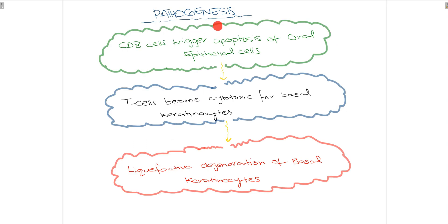Regarding the pathogenesis of oral lichen planus, there are generally three important steps. Firstly, there are T cells called CD8 cells which trigger the apoptosis of oral epithelial cells. When these cells undergo apoptosis, the T cells become cytotoxic for basal keratinocytes. The basal layer undergoes liquefaction, and that liquefactive degeneration of basal keratinocytes leads to the development of oral lichen planus, resulting in different types of characteristic clinical appearances.